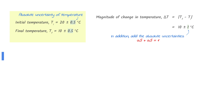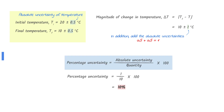To find the absolute uncertainty of the change in temperature, add the absolute uncertainties of the two temperatures. The percentage uncertainty is found by dividing the absolute uncertainty by the quantity, multiplied by 100. The percentage uncertainty for this question is 10%.